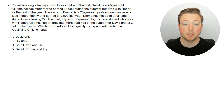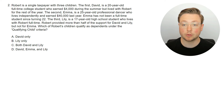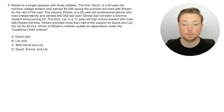Here's question two. Robert is a single taxpayer with three children. David is a 20-year-old full-time college student who earned $4,000 during the summer but lived with Robert for the rest of the year. Emma is a 25-year-old professional dancer who lives independently and earned $40,000 last year — she has not been a full-time student since turning 22. Lily is a 17-year-old high school student who lives with Robert full-time. Robert provided more than half of the support for David and Lily, but not for Emma. Which of Robert's children qualify as dependents under the qualifying child criteria?